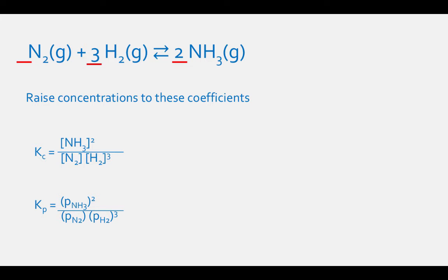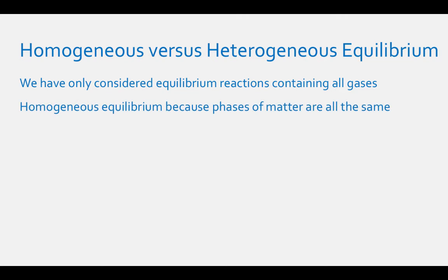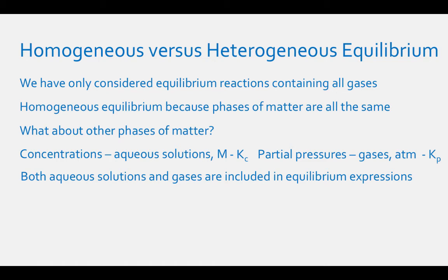Up until this point, we have only considered equilibrium constant expressions of reactions containing gases. These are called homogeneous equilibrium reactions because their phases of matter are all the same. When we say concentration of something, we usually think of aqueous solutions whose units are in molarity. When we say the partial pressure of something, we usually think of gases whose units are in atmospheres. Both aqueous solutions and gases are included in equilibrium constant expressions because they both have concentrations.